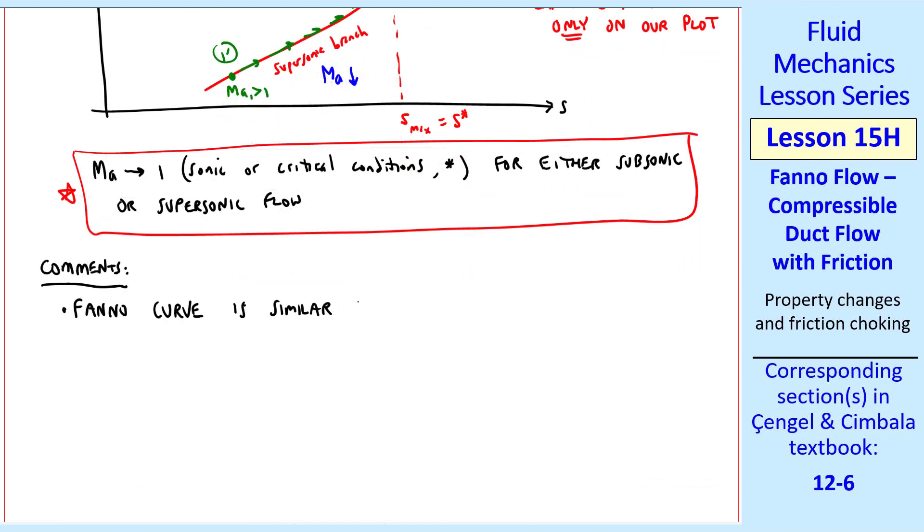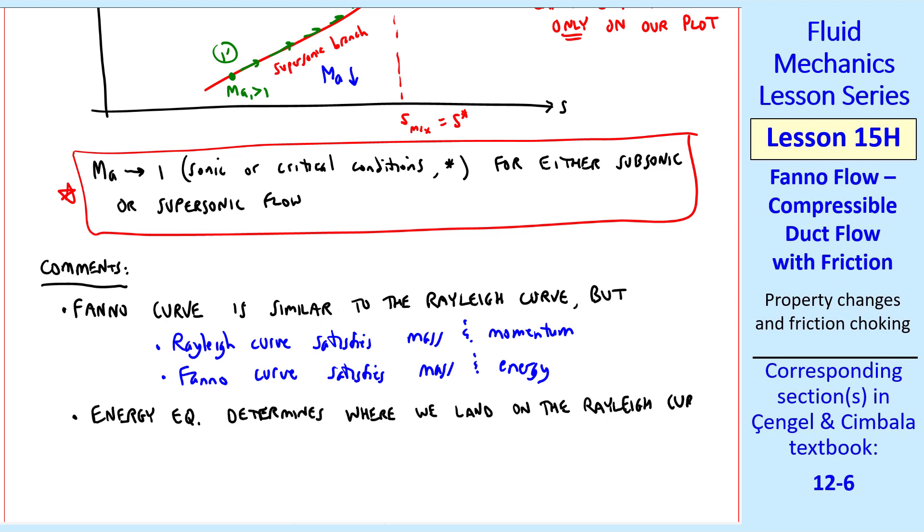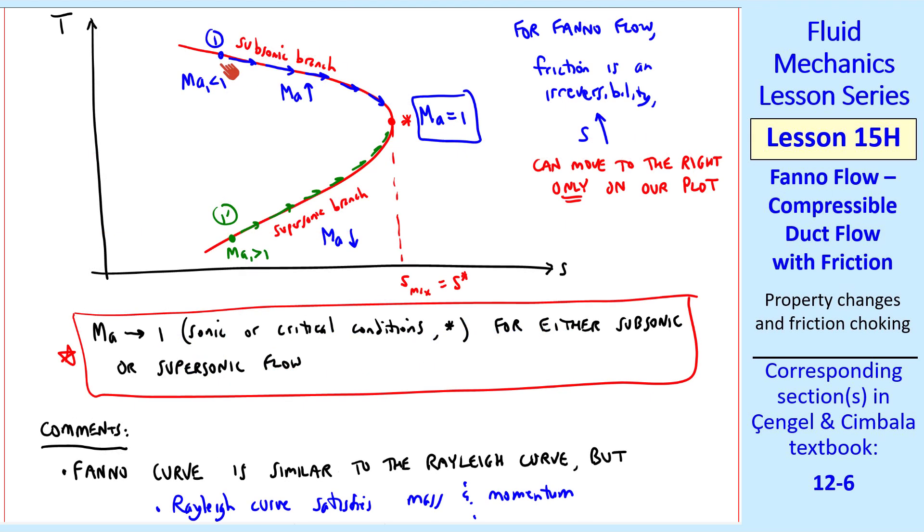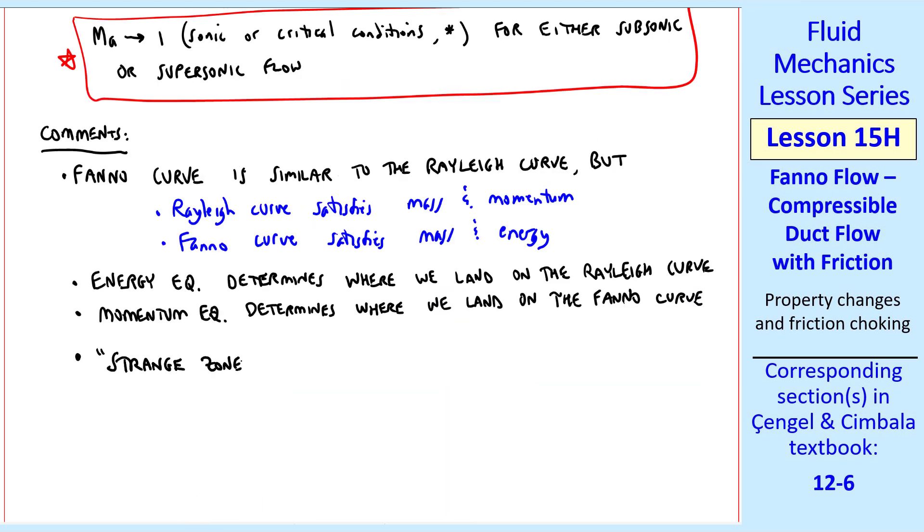I'll make some comments. The Fanno curve is similar to the Rayleigh curve, but the Rayleigh curve satisfies mass and momentum, but the Fanno curve satisfies the mass and energy equations. So we can say that the energy equation determines where we land on the Rayleigh curve, but the momentum equation determines where we land on the Fanno curve. On the Fanno curve, we start at 1, and the amount of friction, or the length of the pipe, determines where we land on this curve. We also notice that there's a strange zone, just like we had with Rayleigh flow, but here, in Fanno flow, the strange zone is the entire subsonic region. What I mean by the strange zone is that as friction increases, temperature goes down, as we see here in the subsonic branch.